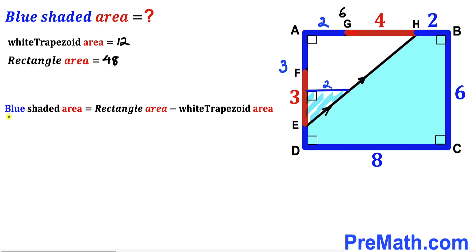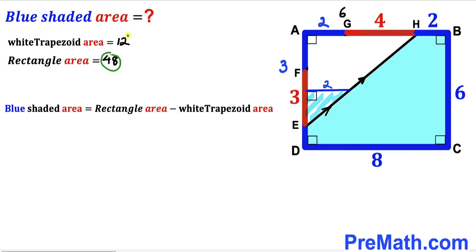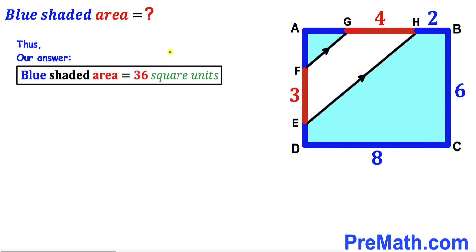Now for the final step: the area of the blue shaded region equals the rectangle area minus the white trapezoid area — that is 48 minus 12, which equals 36 square units. So after all calculations and manipulations, the area of the blue shaded region turns out to be 36 square units. That's our final answer. Thanks for watching and please don't forget to subscribe to my channel for more exciting videos!